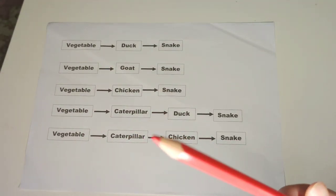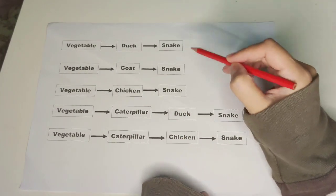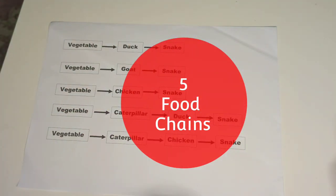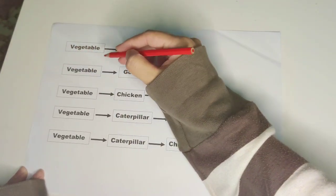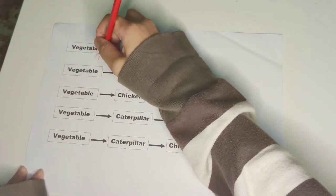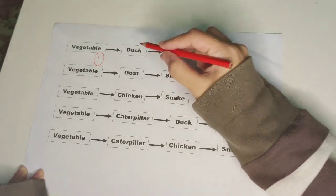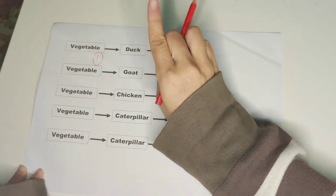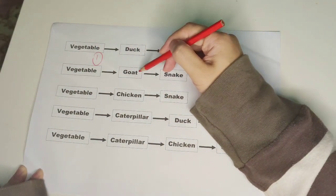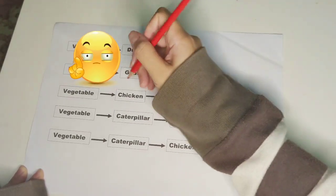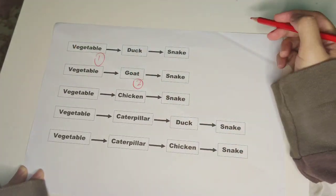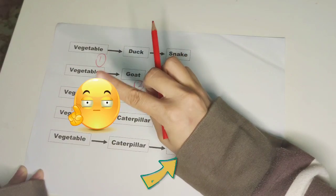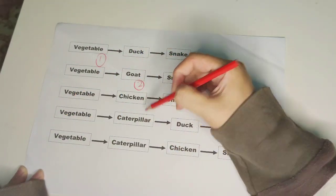Next, we're going to draw a food web using another example with five food chains. First, we need to give numbers for the producer, which is the vegetable. Next, we must find out which animal should be given number two. Duck cannot be number two because there are ducks at the number three position. So, goose can be number two. Chicken cannot be number two because chicken are at position number three.